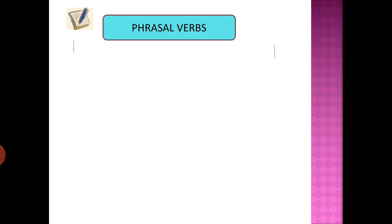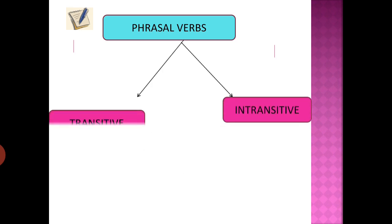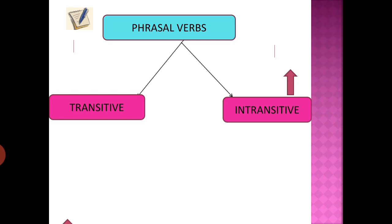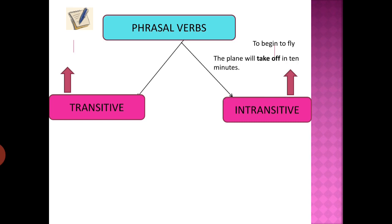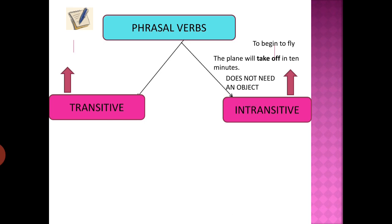Phrasal verbs are of two types: intransitive and transitive. Intransitive phrasal verbs, like intransitive verbs, do not have any object — the action is not carried to any object. For example, 'The plane will take off' means to begin to fly, and there is no object after this phrasal verb.